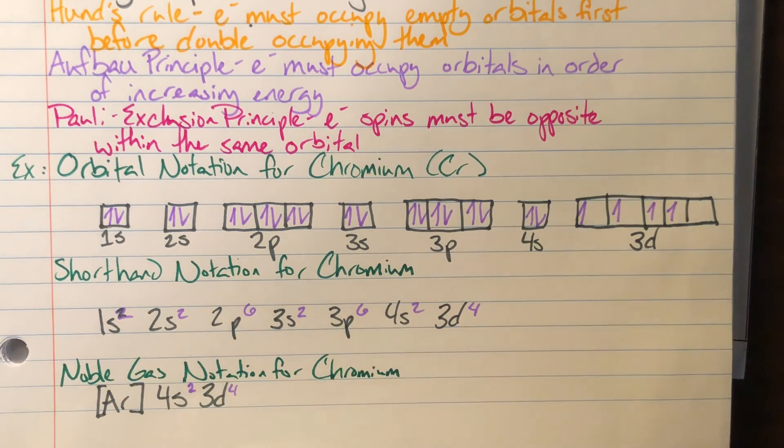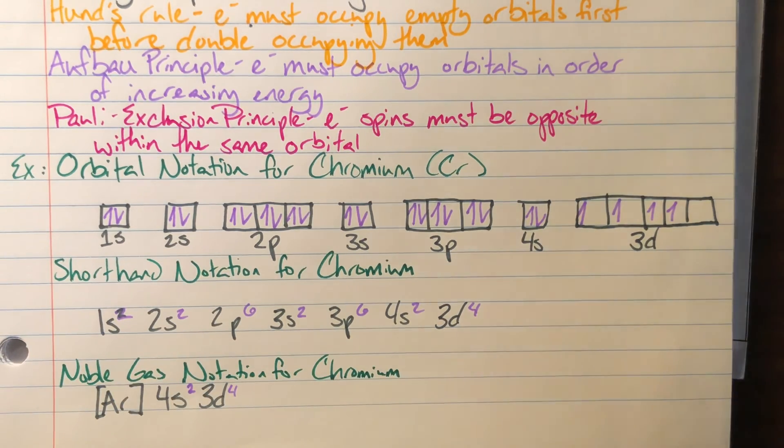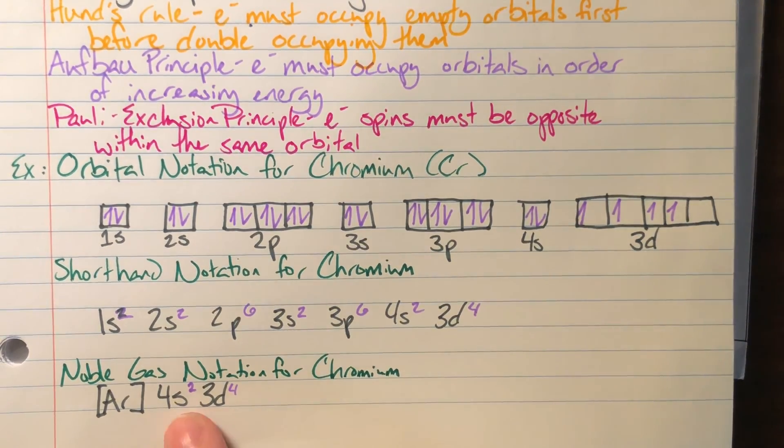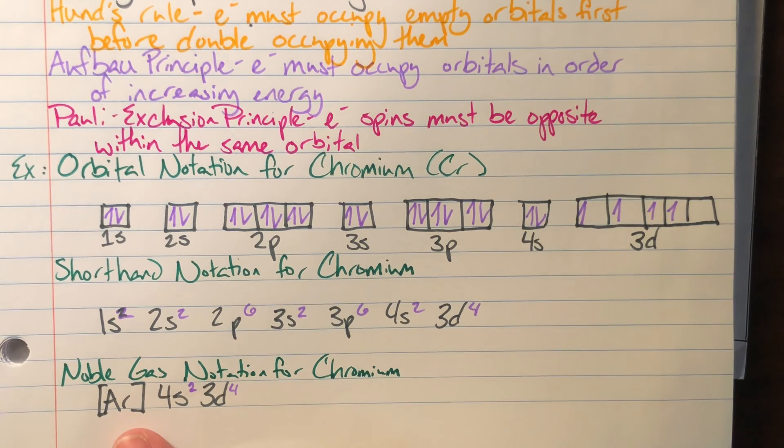My last notation for electron configurations are my noble gas notations. My noble gas notations are going to take the nearest noble gas and say, you know what argon looks like in our case? Well, argon's perfect little electron configuration. Yeah, that. Plus, and then I'll state any electrons that argon does not have.